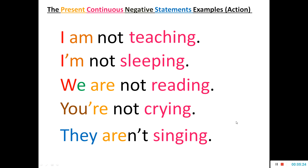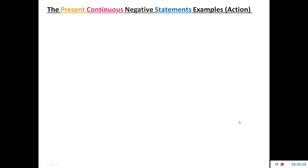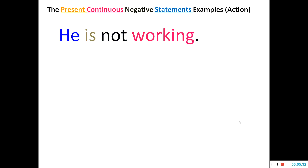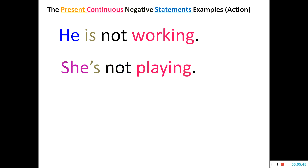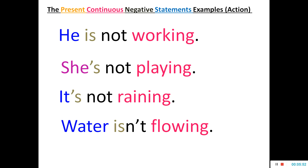Now let us take examples with third person singular subjects. 'He is not working.' Not is placed after the auxiliary verb to form the negative sentence in the present continuous tense. 'She is not playing.' 'It is not raining.' 'Water is not flowing.' You can make many sentences like these at home. You can contract in both ways — either contract the auxiliary and attach it to the subject, or contract 'not' and attach it to the auxiliary verb.